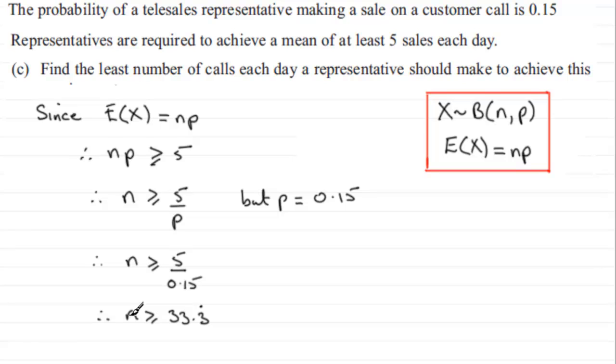Now n has got to be an integer, a positive integer, so therefore what's the least value that n can be? So I'm just going to come back and say therefore least value of n must equal 34.